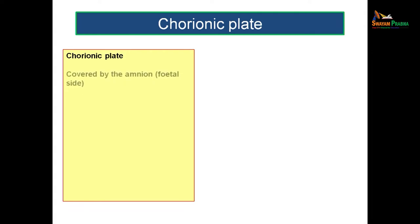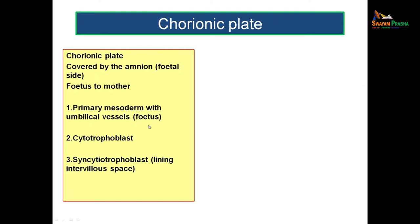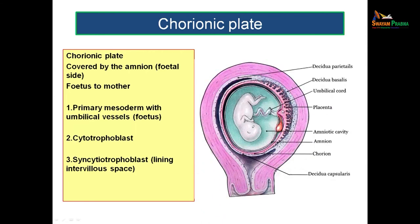Let us see each part of the placenta in detail. The chorionic plate is seen on the fetal side, covered by amnion. Tracing from fetus to mother: the first thing seen is the primary mesoderm with umbilical vessels, then the cytotrophoblast layer, then the syncytiotrophoblast layer which lines the intervillus spaces. The syncytiotrophoblast actually lines the intervillus space between villi.